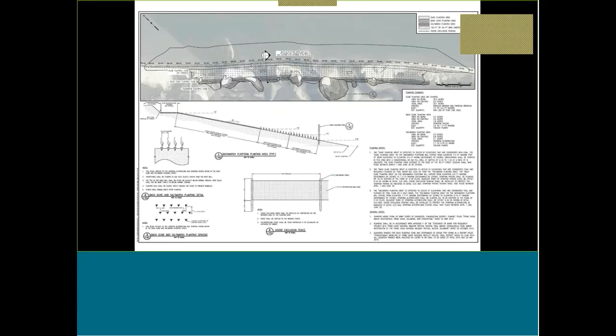Here's an example of a shoreline project at Prime Hook — about 9,000 linear feet total, building a beach and a large back barrier platform. The planting plan included about 35 acres of back dune with Panicum amarum and Panicum virgatum, about 8 acres of Spartina patens, and 9 acres of Spartina alterniflora. However, the yellow line showing what was planned versus the green line showing what was actually built were significantly different — both in aerial extent and elevations.